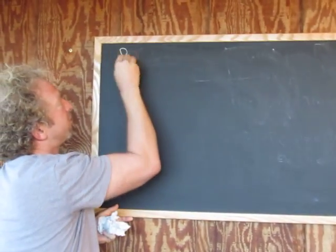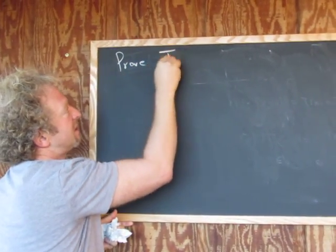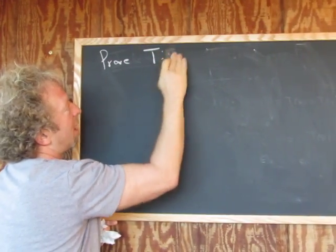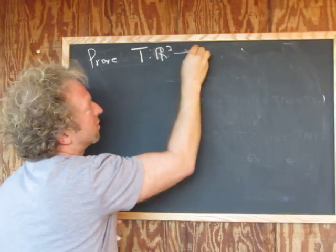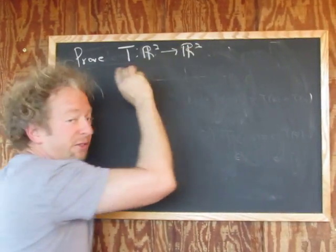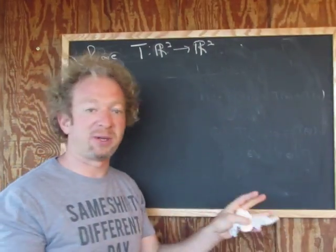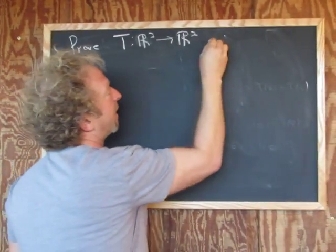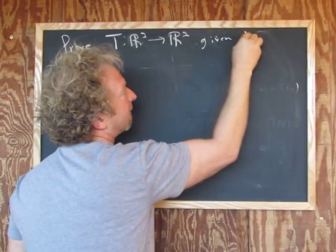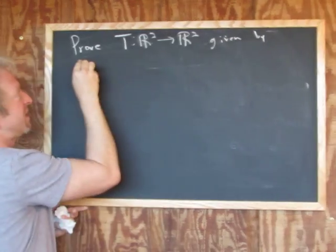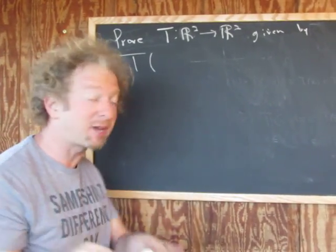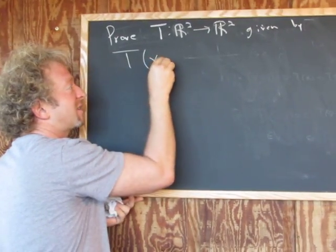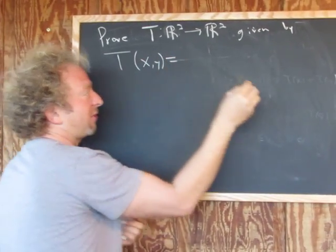So here the T, so proof. T from R squared into R squared. The overlying field is the real numbers. So T given by, and so what does T have to do? T has to take a vector. Now, a vector is an ordered pair, right, so it has an X and Y component. So it has to take the X and the Y, and it has to reflect it.